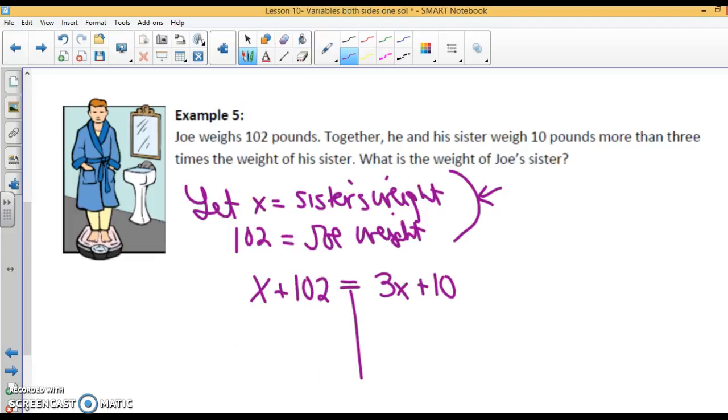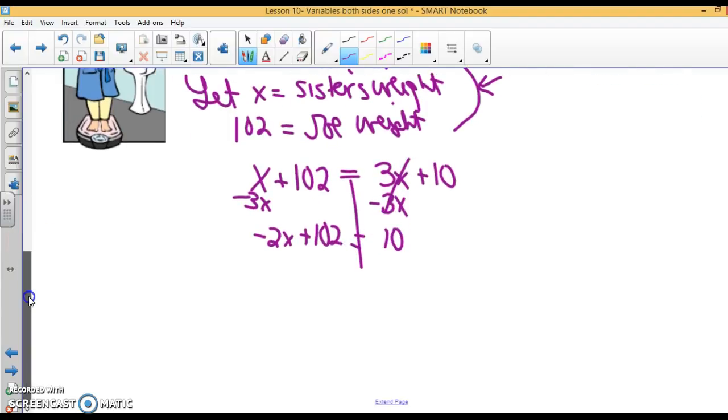This would be nearly impossible if you don't set up your variables for what you don't know. Can I simplify at all? No. Let's move this 3x over here. Subtract 3x from both sides. x minus 3x is negative 2x plus 102 equals 10. Subtract 102 from both sides. I'm going to have negative 2x equals negative 92. Divide both sides by negative 2. x is 46 pounds. That's the sister's weight.